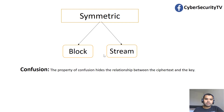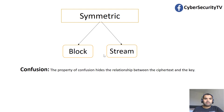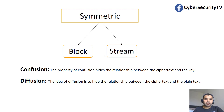Before we go further, I want to talk about two terms: confusion and diffusion. The property of confusion hides the relationship between the ciphertext and the key. So if an attacker gets hold of the ciphertext, it should not give them any idea to derive the key and decipher the ciphertext. The idea of diffusion is to hide the relationship between the ciphertext and the plaintext.